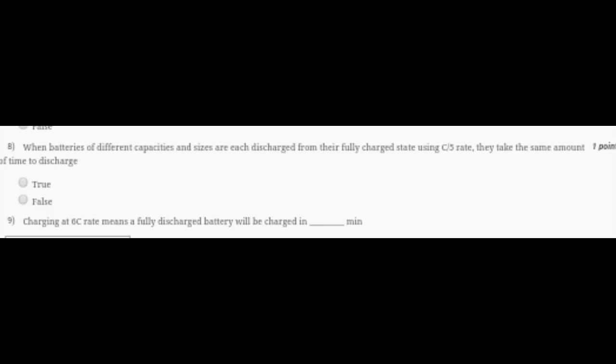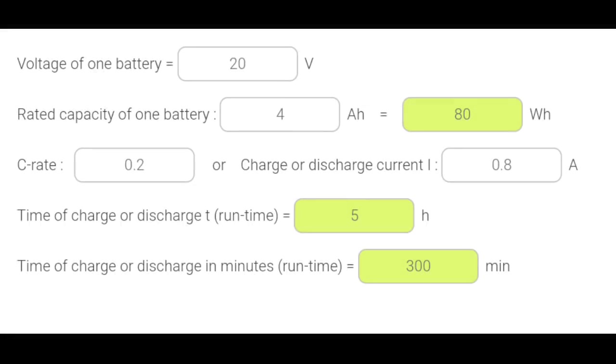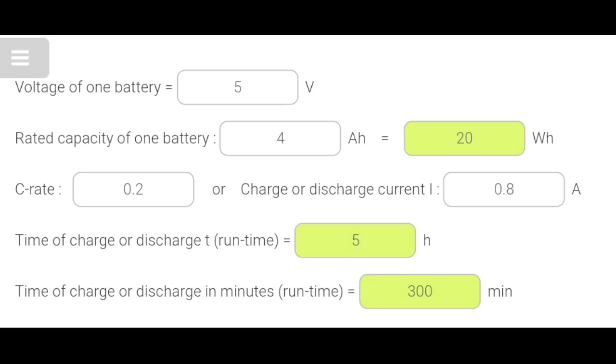You can see the proof here - the formulas are given. The C-rate value I have used is 0.2, which is equivalent to C/5. In this picture, I've taken voltage equal to 20 and capacity equal to 4, and the time of charge or discharge is 5 hours. In the second picture, I've taken voltage equal to 5 and capacity equal to 4, with the same C-rate of 0.2, and again the time of charge or discharge is 5 hours. The time is remaining constant. So our answer is True.